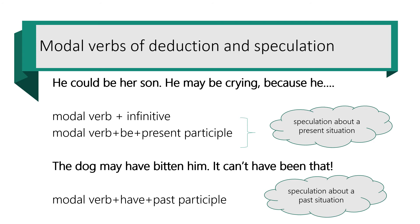Harry was speculating. He said 'he could be her son' and 'he may be crying because he...' When we speculate, we use modal verbs of deduction and speculation. We do it by using a modal verb plus infinitive, or modal verb plus be plus present participle, when we speculate about a present situation. For example: 'The dog may have bitten him' or 'It can't have been that', as Harry said. When we speculate about a past situation, we express that with modal verbs plus have plus past participle.